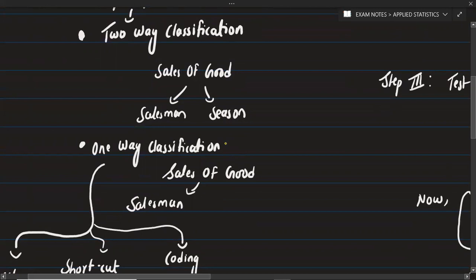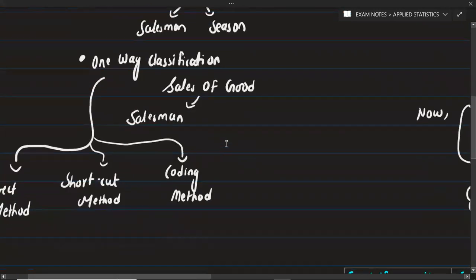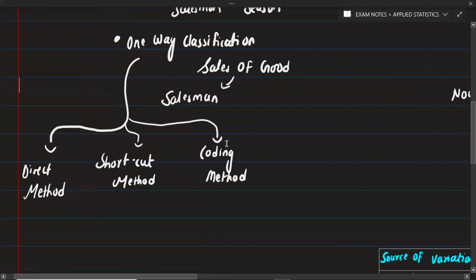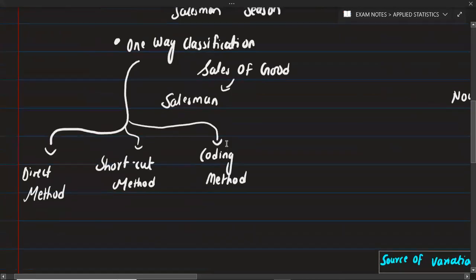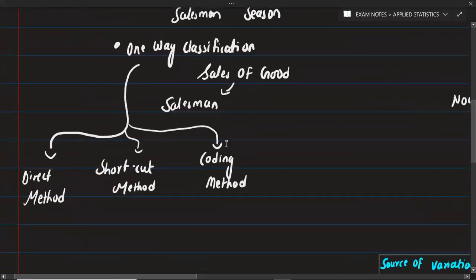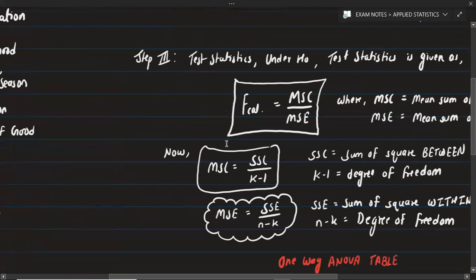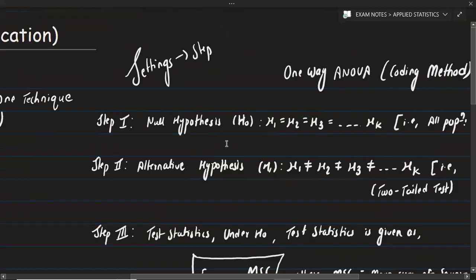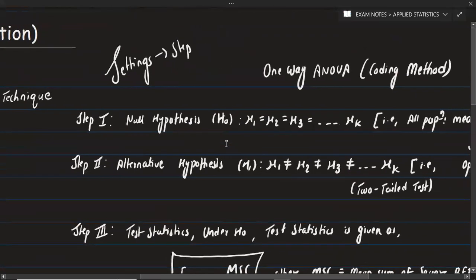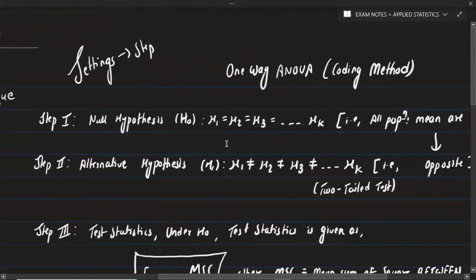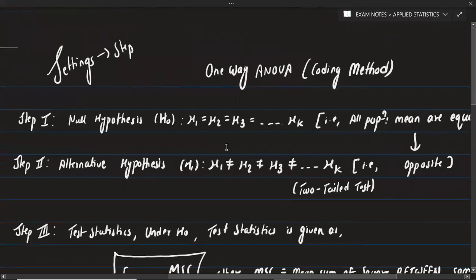For one-way classification, we have a direct method, a shortcut method, and a coding method. Generally, I will use the coding method here. So we will proceed using the coding method.